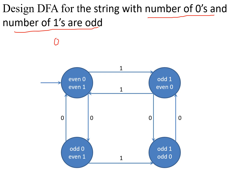Take the string '101' — it has one zero and two ones. This gets accepted, ending at the final state, which accepts odd number of zeros and odd number of ones. Similarly, '10' is also accepted — it also has an odd number of zeros and an odd number of ones.